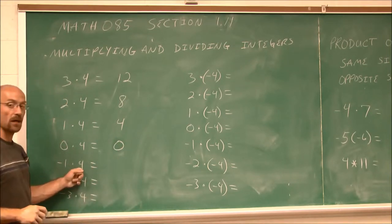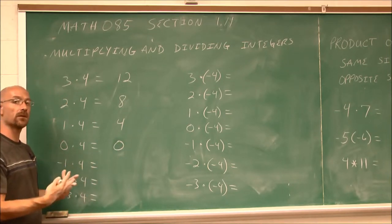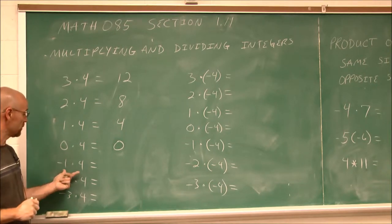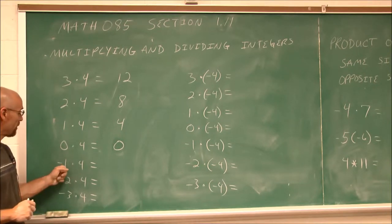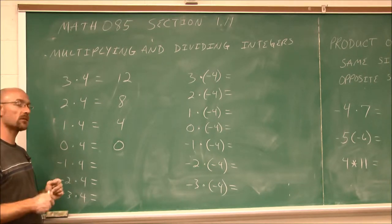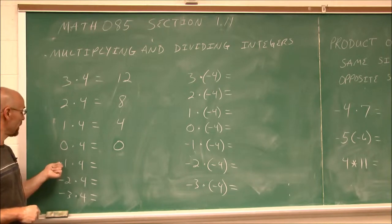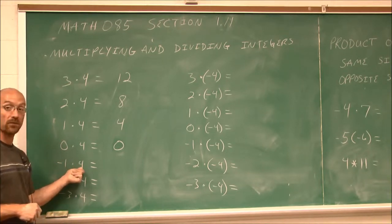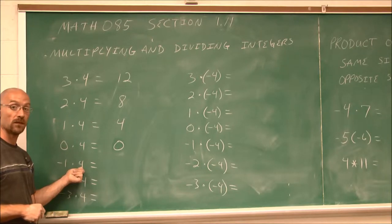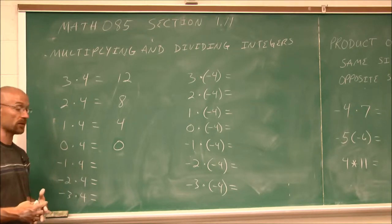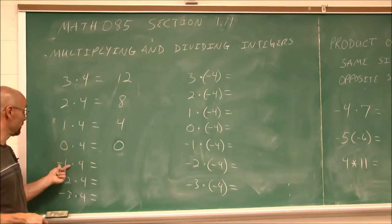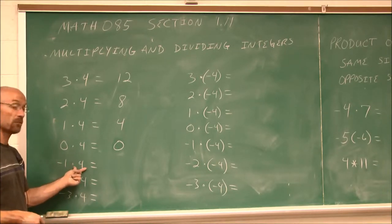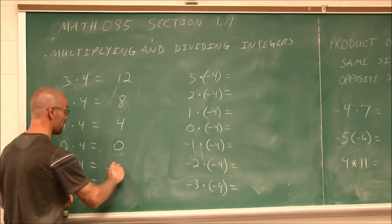Negative 1 times 4 — now we introduce negatives, so this might be a little bit new. If I owe $1 to four different people, how much do I owe altogether? Negative 1 times 4 — I would owe it four times: negative 4.